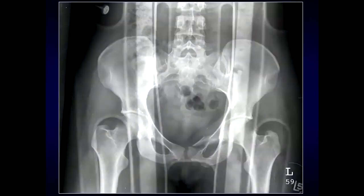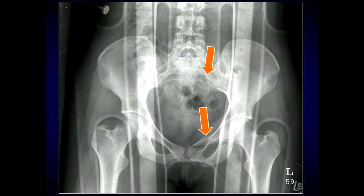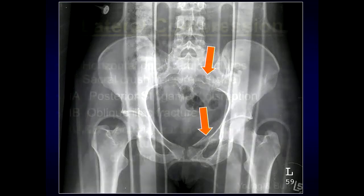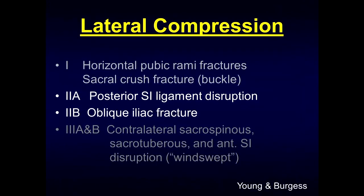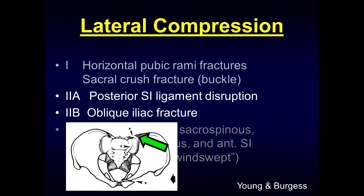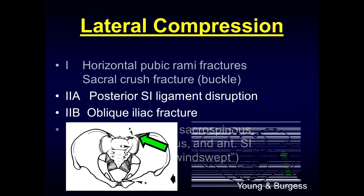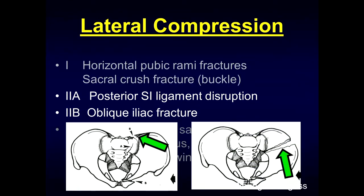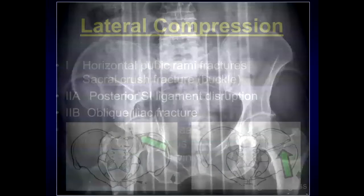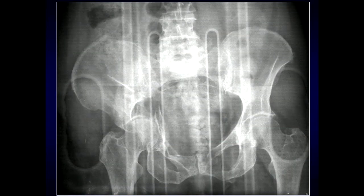On the AP view of the pelvis, we can see there's disruption of those normal sacral arcs as well as the rami fractures. Type 2A involves posterior SI joint ligament disruption, and type 2B involves an oblique iliac wing fracture. On radiographs, we can see the iliac wing fracture, as well as a comminuted fracture of the acetabulum and bilateral rami fractures.